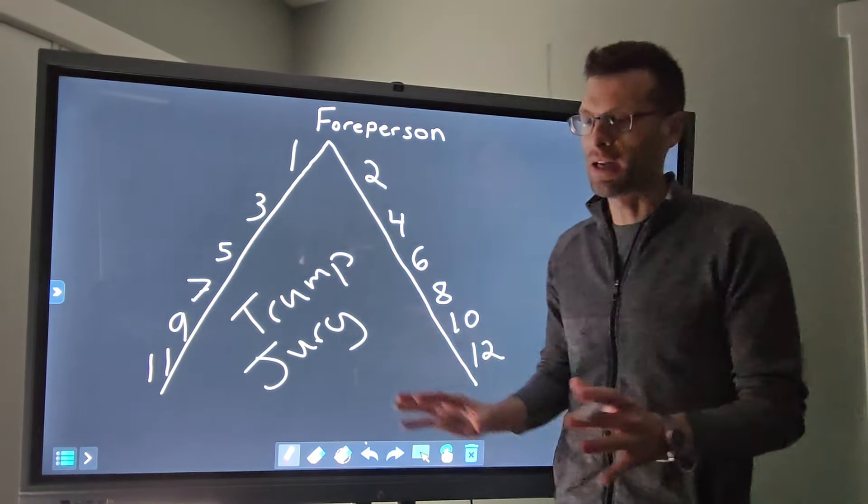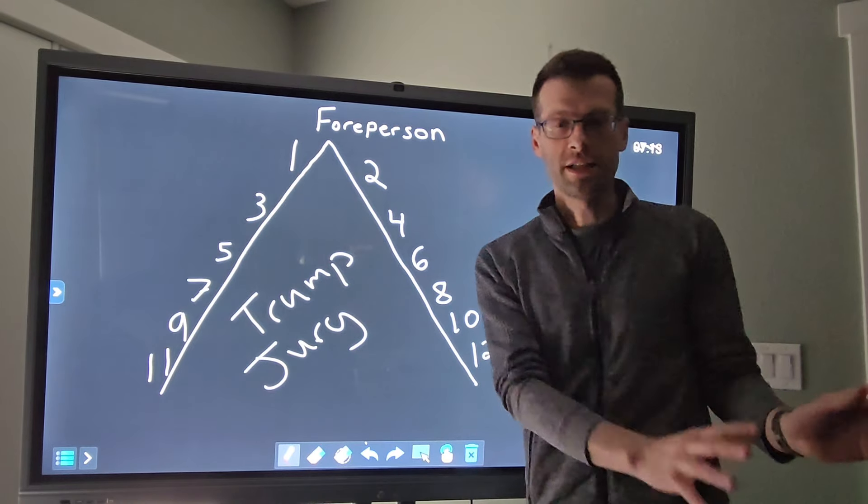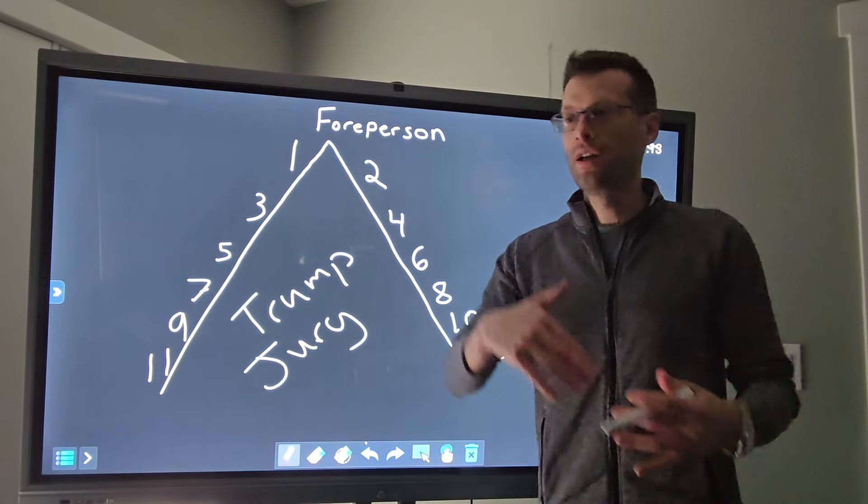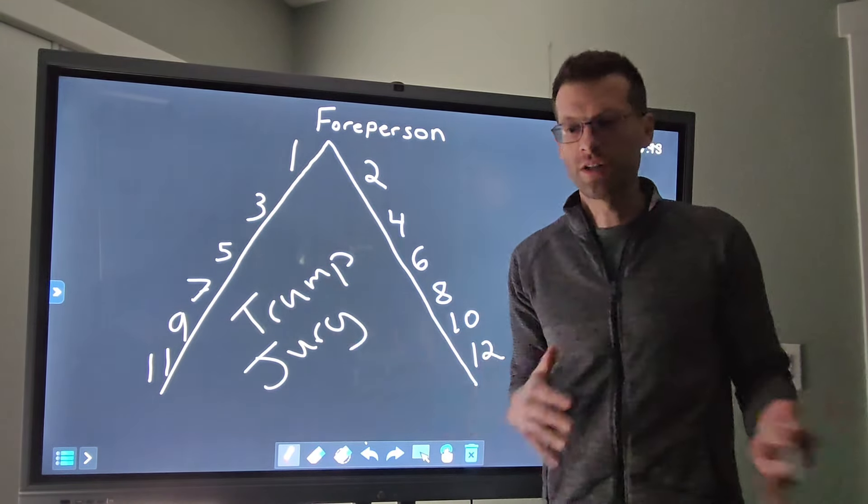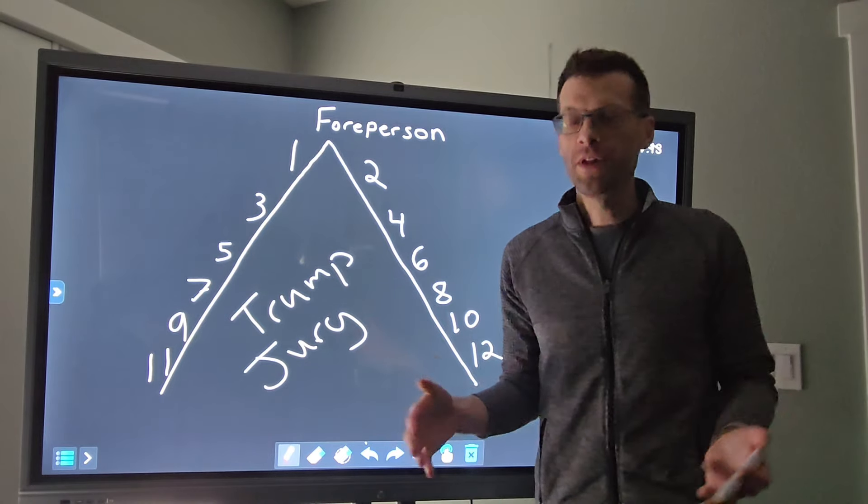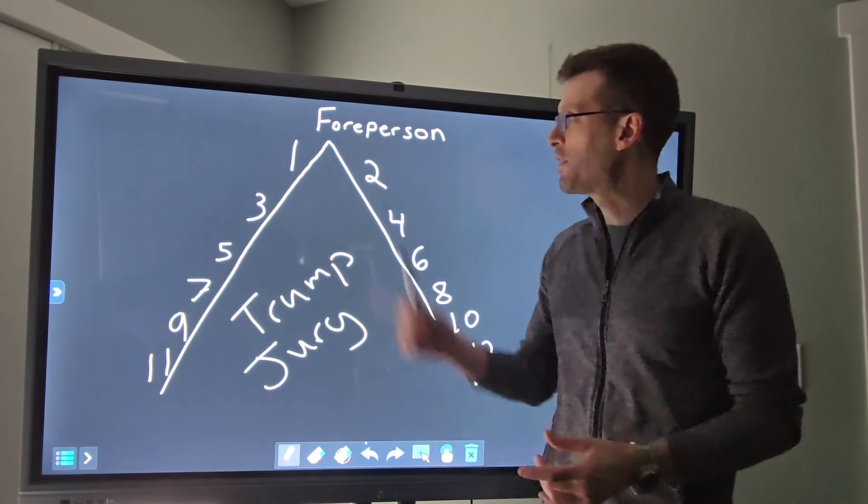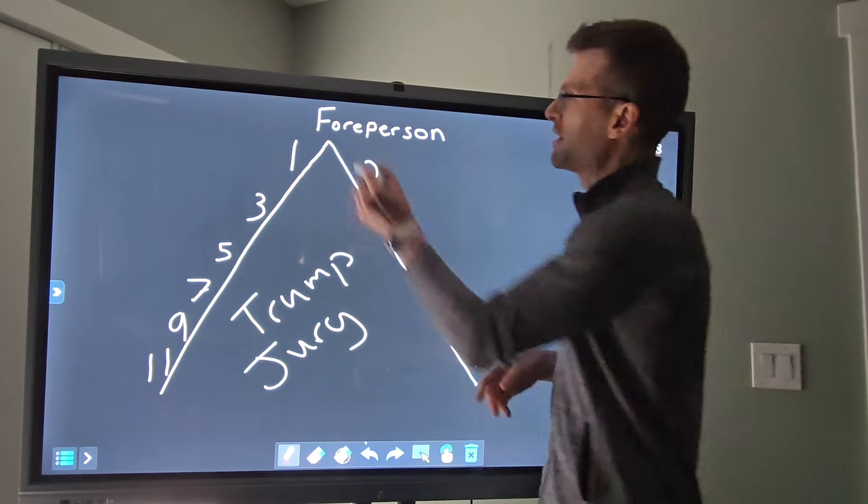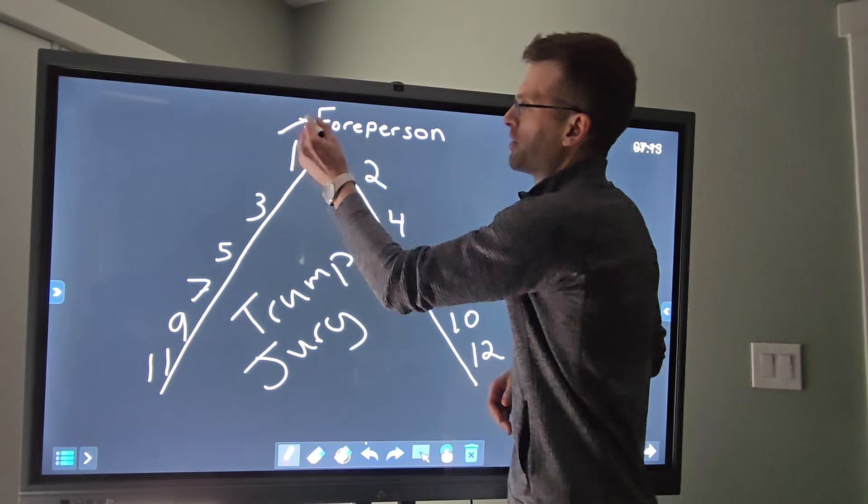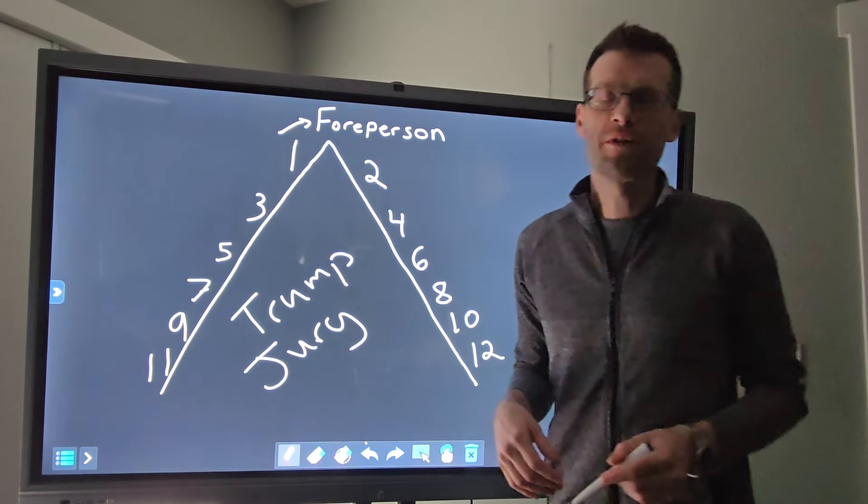So going back to the beginning, when the jury gets sent to the jury room to deliberate, first they hear all those instructions from the judge on what they have to do and following the law. Then when they go in there, they pick the foreperson.